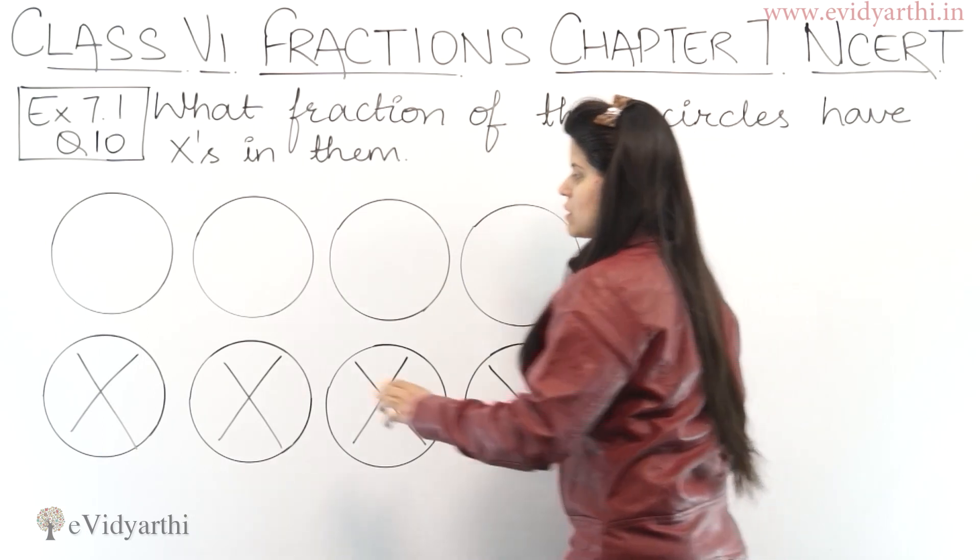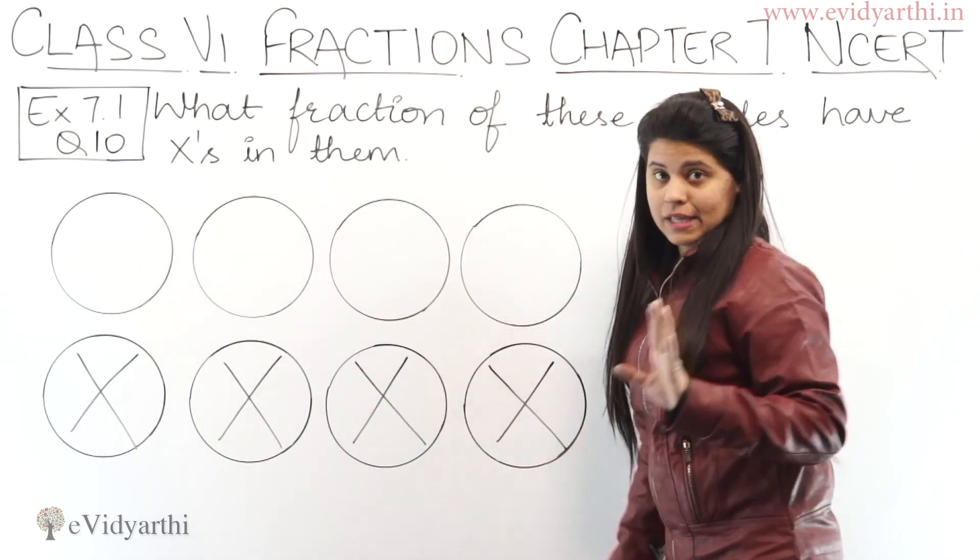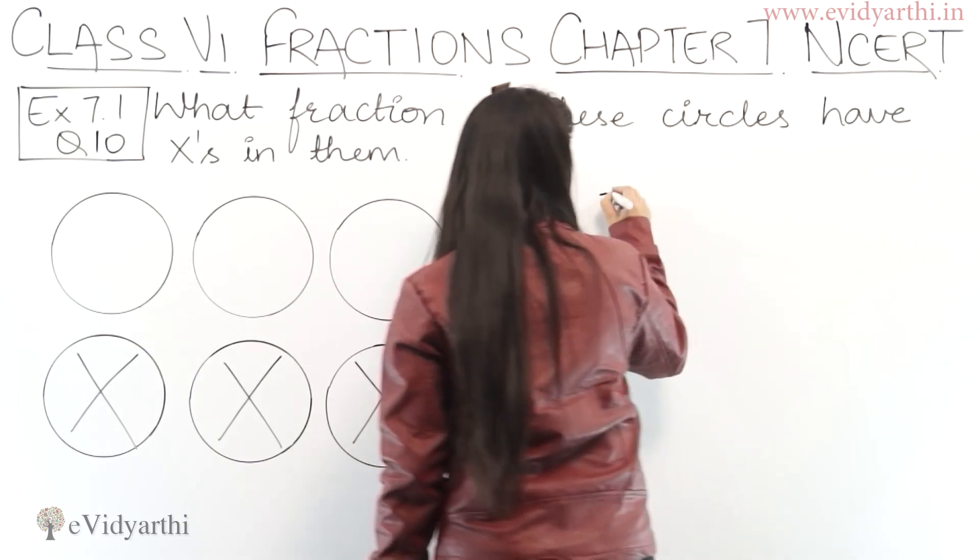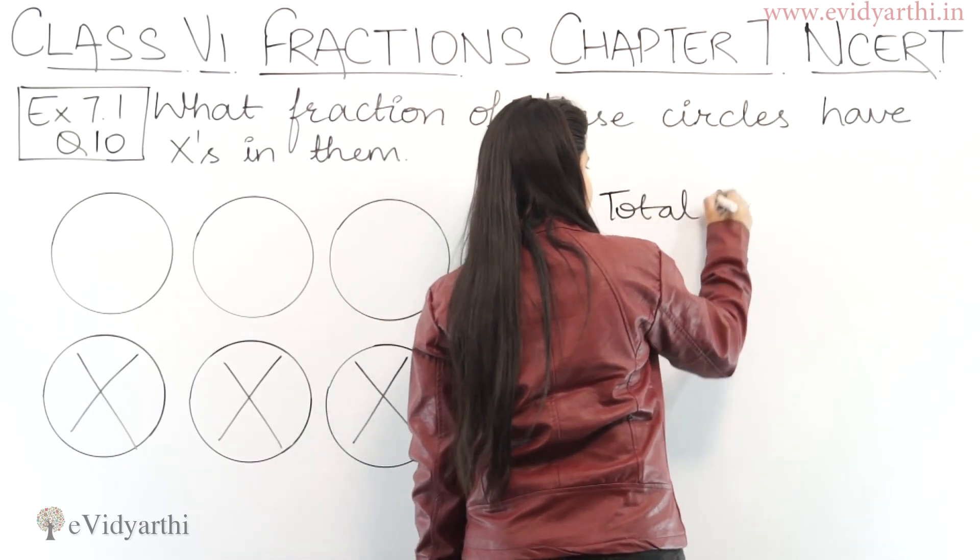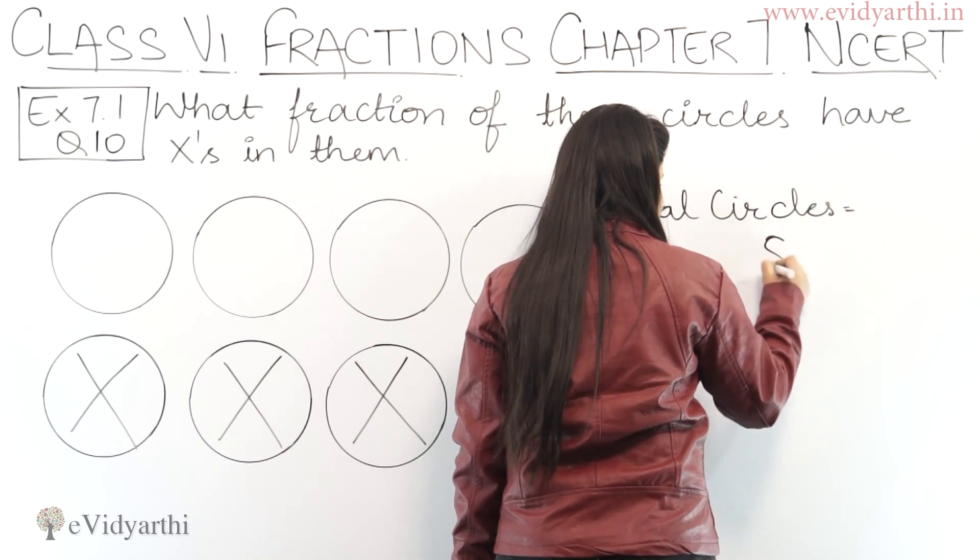So first, let's count the number of circles we have: 1, 2, 3, 4, 5, 6, 7, 8. So total number of circles are 8.